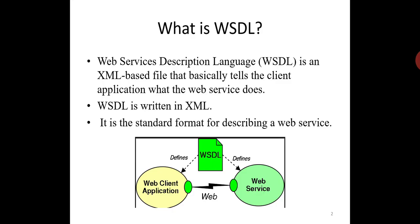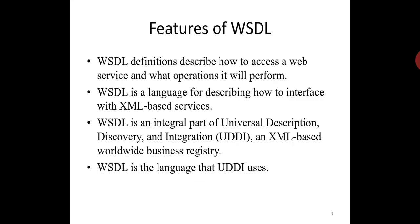WSDL is an XML grammar for describing network services as a collection of communication endpoints capable of exchanging messages. WSDL is an XML-based protocol for information exchange in decentralized and distributed environments. It describes how to access a web service and what operations it will perform. WSDL is a language for describing how to interface with XML-based services.